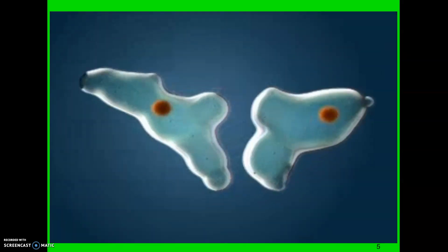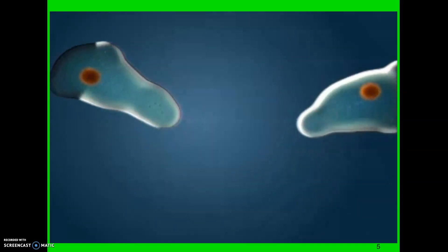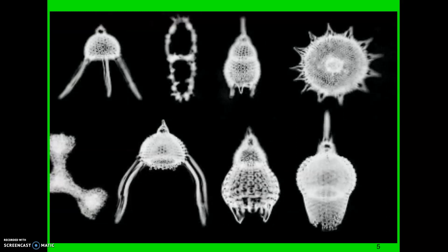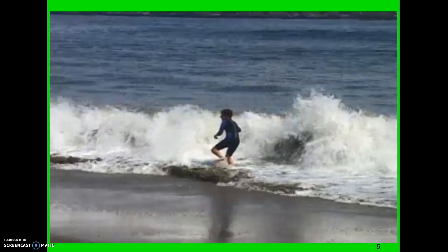Sarcodynes most commonly reproduce via cell division. Some kinds of amoebas can cause diseases — amoebic dysentery is an example and is most commonly contracted from drinking contaminated water. Some sarcodynes, such as radiolarians and foraminiferans, are surrounded by protective shells. Radiolarians, for example, have glassy silica-based skeletons. These organisms are abundant in the oceans.